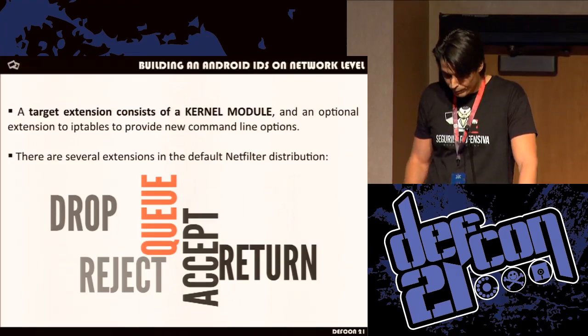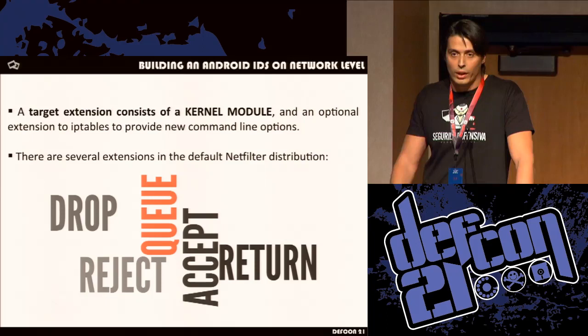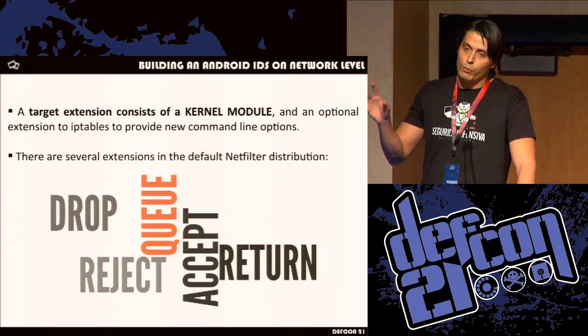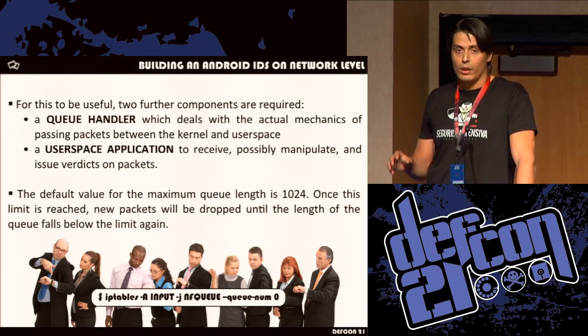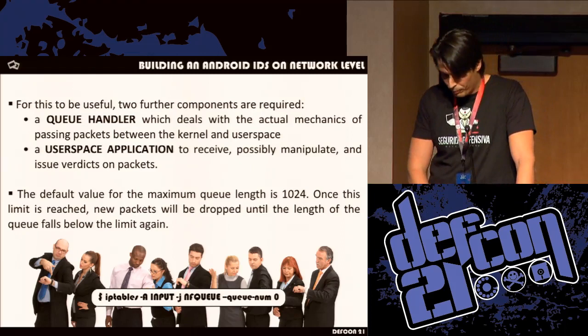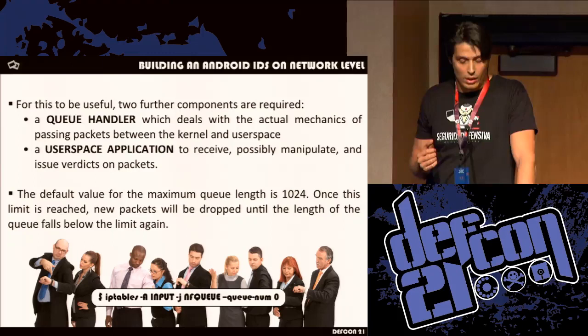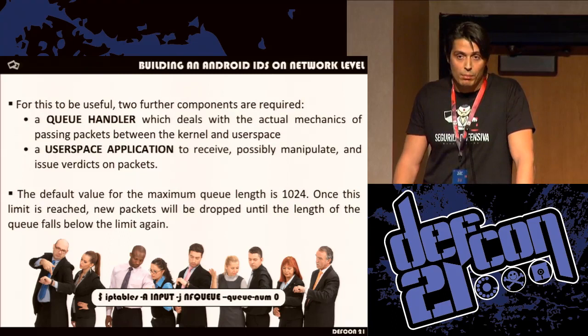We have several targets for IP tables: you can accept a packet, you can drop a packet, you can let the remote computer know you dropped it. But there is a special one called QUEUE — that means pass the packet from kernel space to user space. This queue delegates the decision of packets from kernel space to user space, so in user space you must have a listener that takes care of every packet. You have to issue a verdict for each packet: accept it, drop it, or modify it in real-time before it gets into the TCP/IP stack. You have to be very fast, because if the queue gets full, all other packets received will be dropped.